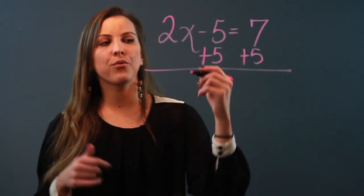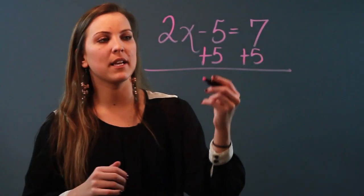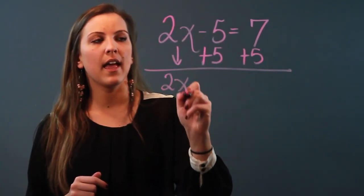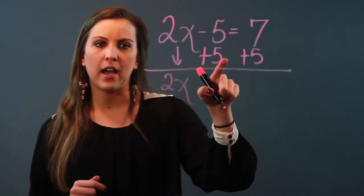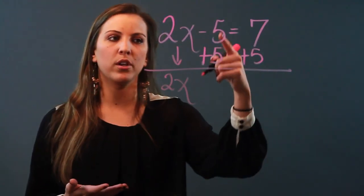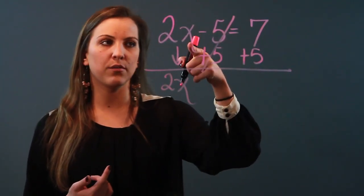And the whole reason that I'm doing the inverse operation is because now when I bring down my 2x and I do negative 5 plus 5, I end up with 0. So that's the point: you want to get rid of these terms to eventually isolate the variable.